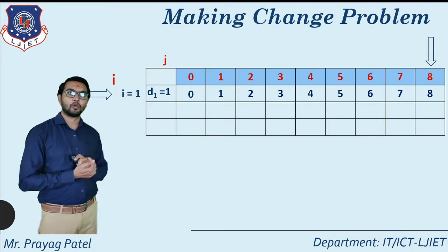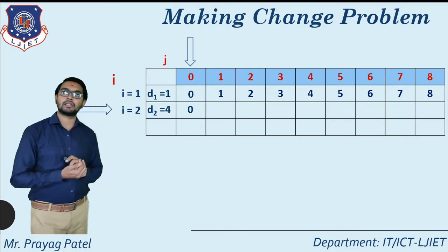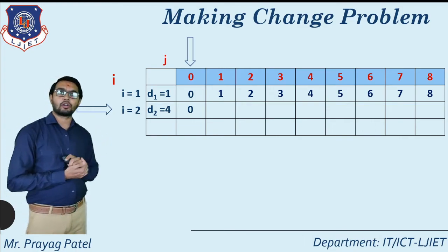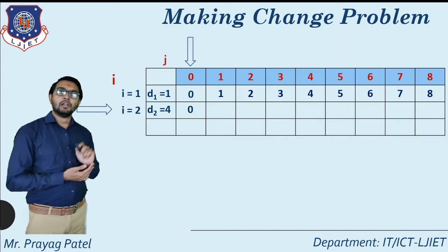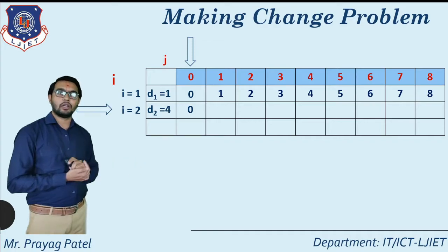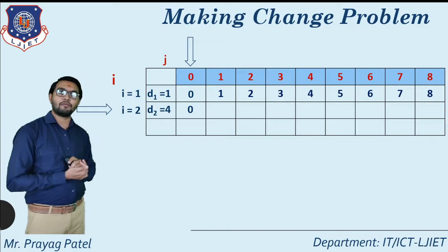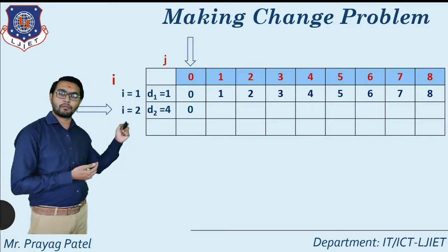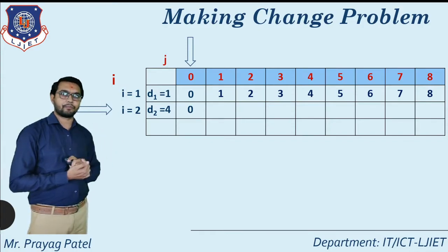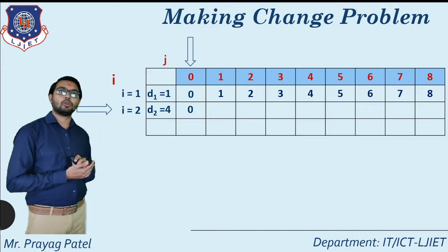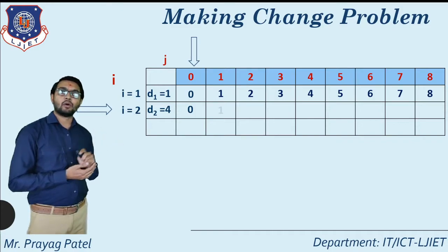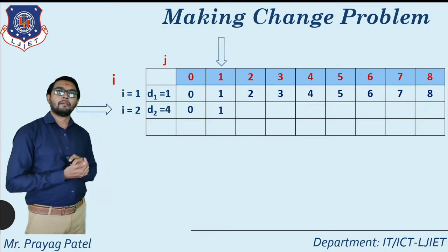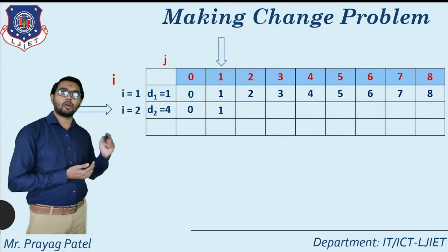Now consider the second row: i equal to 2 and d2 equal to 4. In row 2 we consider coin number 1 and coin number 4 as available; coin number 6 is not available. C[2][0] equals 0, since no coin is needed to make change for 0. Next location C[2][1]: we want to make change for 1 and we have coins of denomination 1 and 4.